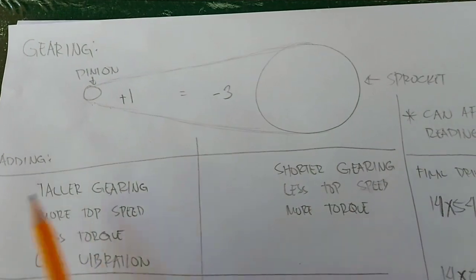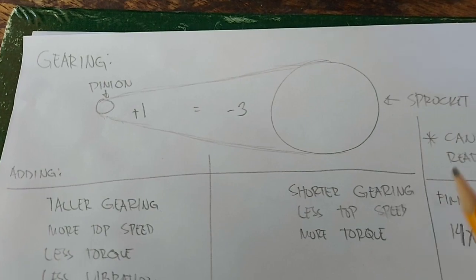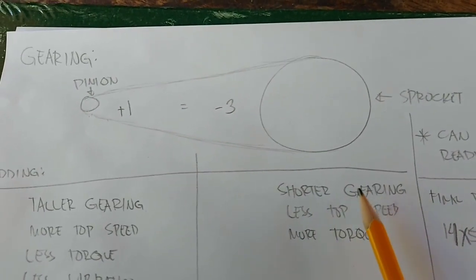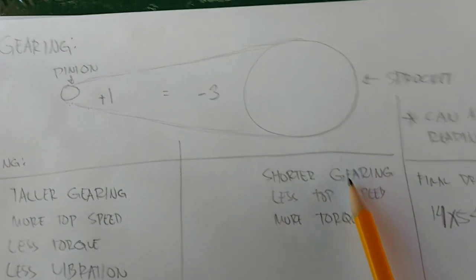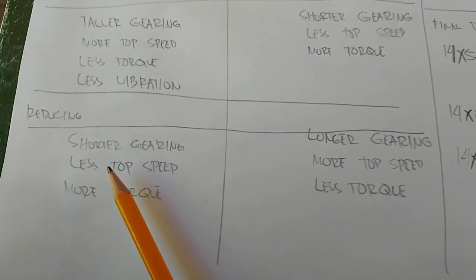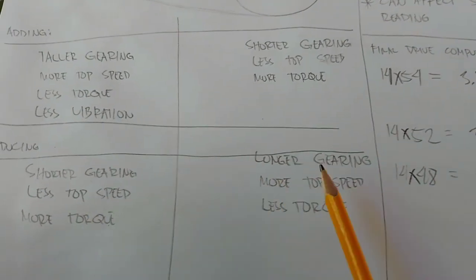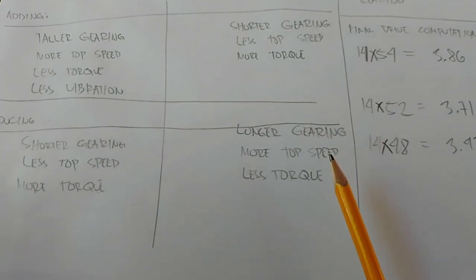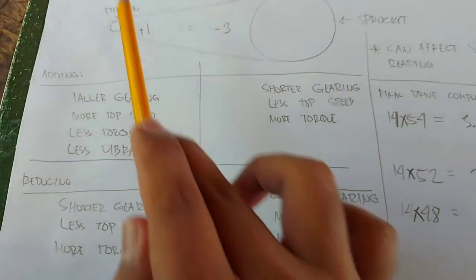Let's move to the sprocket. If you add teeth to the sprocket, you get shorter gearing, less top speed and more torque, same as removing one tooth from the pinion. Conversely, if you remove teeth from the sprocket, you get longer gearing, more top speed and less torque, equivalent to plus 1 on the pinion.